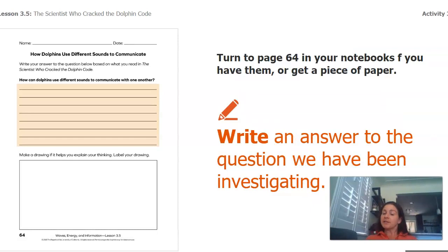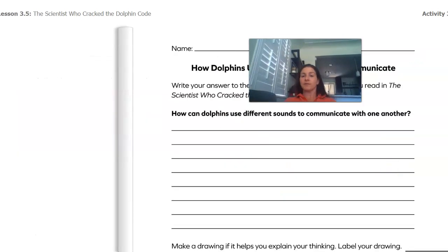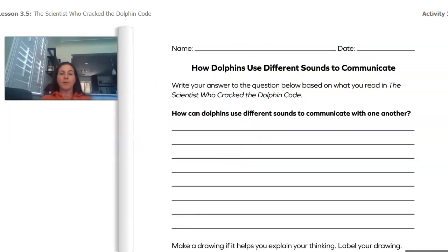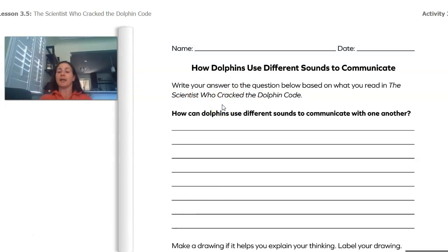Now if you have your notebook, please go to page 64. If you don't, that's okay — just grab a piece of paper. We're going to write an answer to the question that we've been investigating: how can dolphins use different sounds to communicate with one another? Pause the video and take a moment on page 64 or on your piece of paper to write your answer. When you're ready, come back.